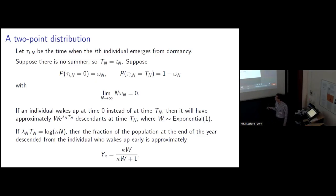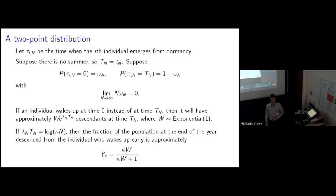Suppose lambda_N times T_N is equal to the log of kappa_N. Then this quantity simply equals kappa times w times N. There will also be N minus one individuals that emerge from dormancy at the end of the spring. And so the fraction of the population that will be descended from the individual that wakes up early from dormancy will be approximately this random variable Y_kappa, which is defined to be kappa times w divided by kappa times w plus one.